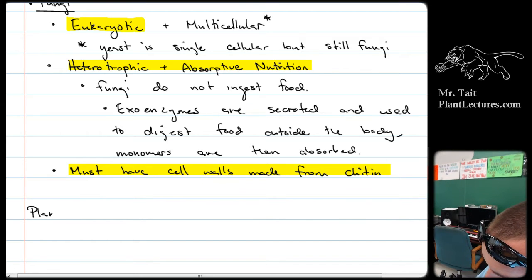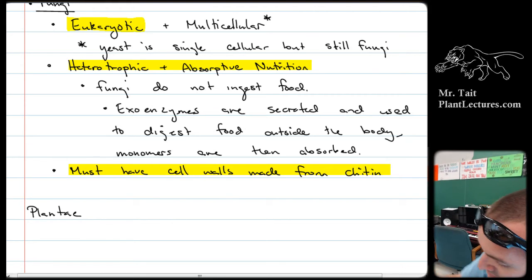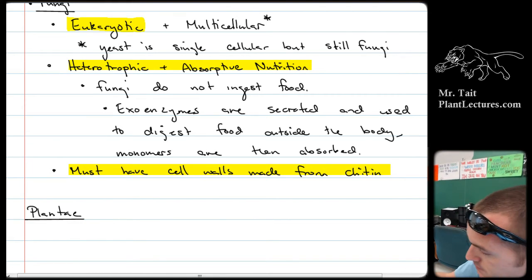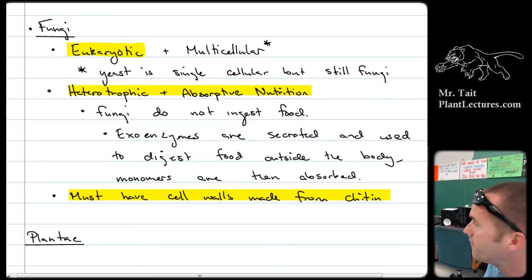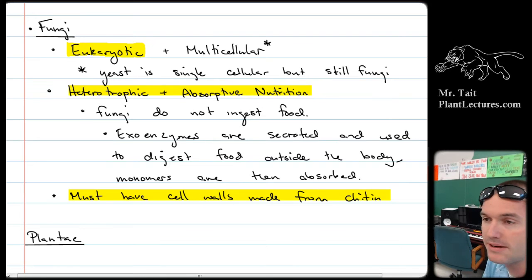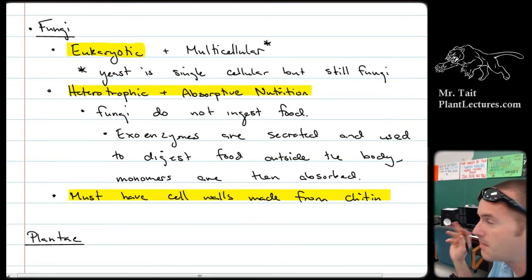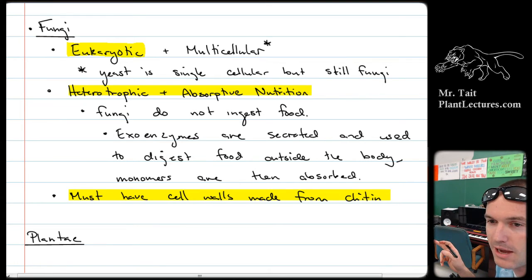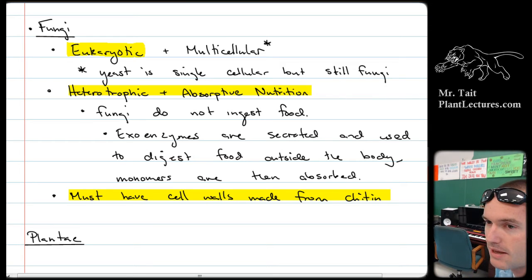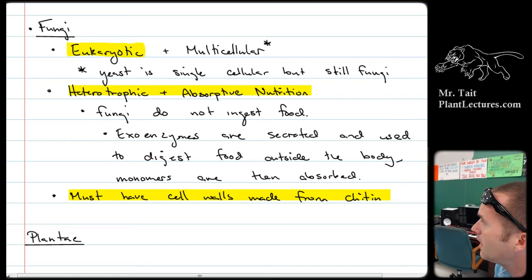Let's talk about plantae — the plant kingdom. Interestingly, in the three-kingdom system that preceded the five-kingdom system, plants and fungi were together because we used to think fungi were photosynthetic and could make their own food. It turns out they cannot, so they needed to be in a separate grouping, and we divided fungi from plantae.